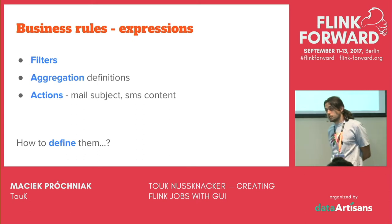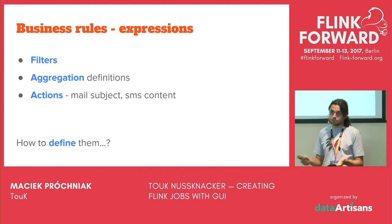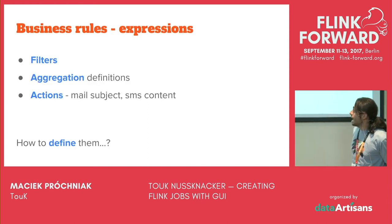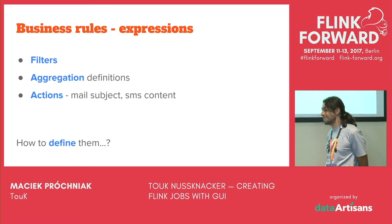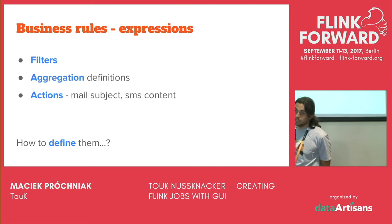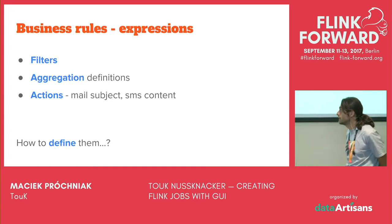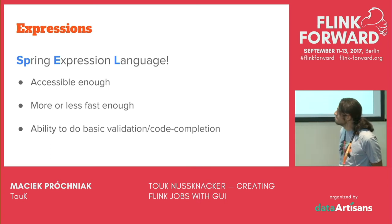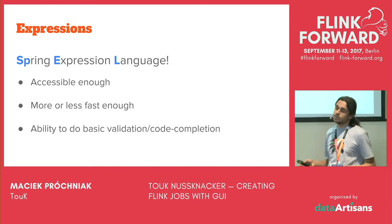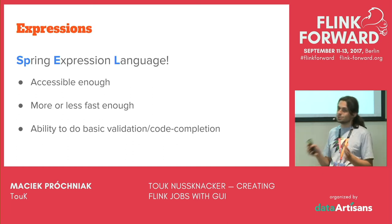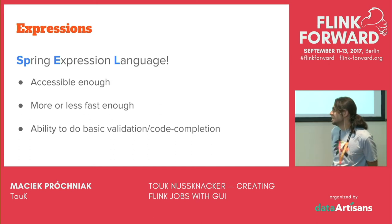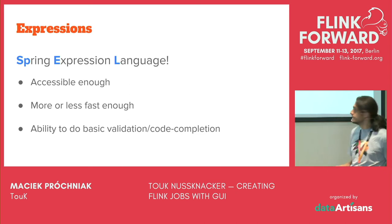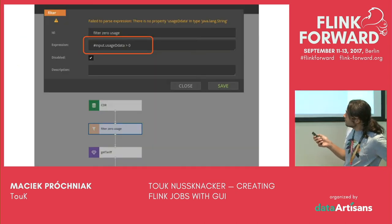These are the basic blocks for the model. But how do you define business rules — for example, filters, or where in a Kafka event a client ID resides? We employ a nice expression parser. We considered different possibilities, including using Calcite, but it turned out to be too heavyweight. Currently we stick with Spring Expression Language, which is surprisingly usable — accessible enough for our analysts. We had to do some tweaking, but we're pretty happy with it. The syntax tree is simple enough that we can parse it and do some basic validation and code completion.